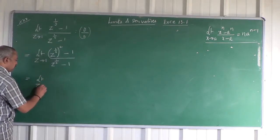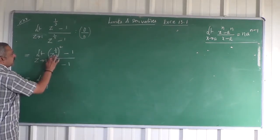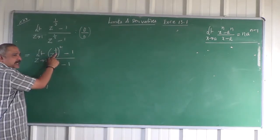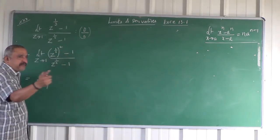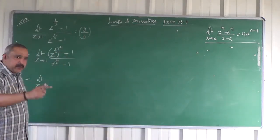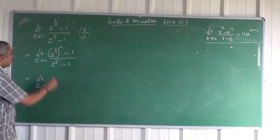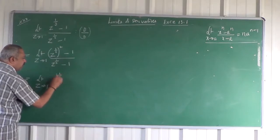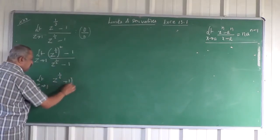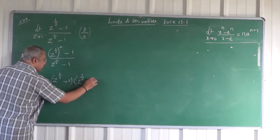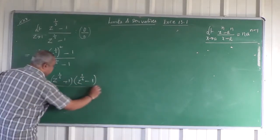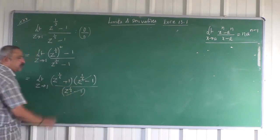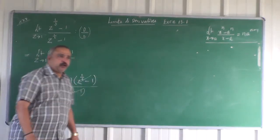This is limit Z tending to 1. This is of the form X square minus 1. If you regard Z to the power of 1 by 6 as X, then it becomes X square minus 1. What is the factor of X square minus 1? X plus 1 into X minus 1. So Z to the power of 1 by 6 square minus 1 can be written as Z to the power of 1 by 6 plus 1 into Z to the power of 1 by 6 minus 1.